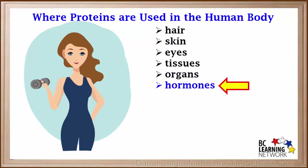In addition, hormones which carry chemical messages throughout our body are proteins, as are enzymes which enable most of the chemical reactions in our body. Antibodies, which are part of our immune system, are also proteins.